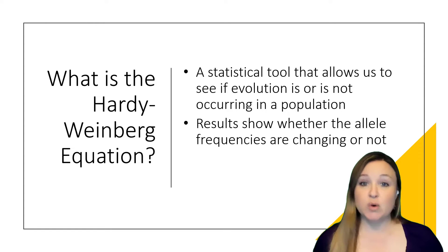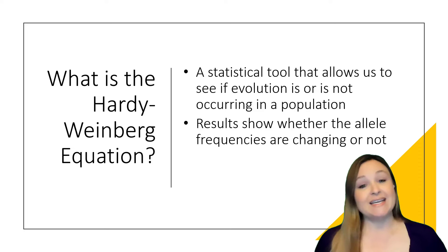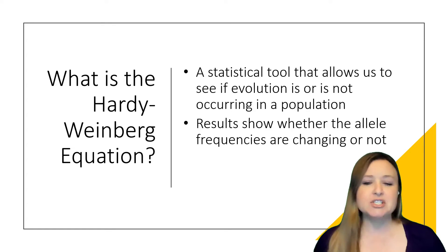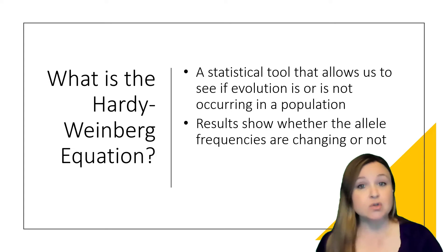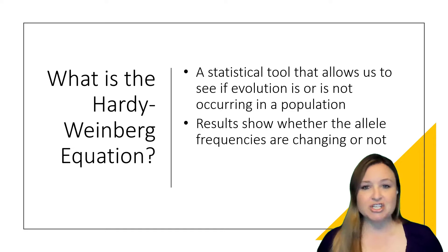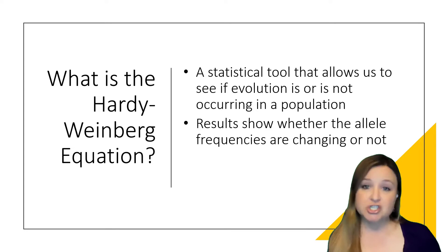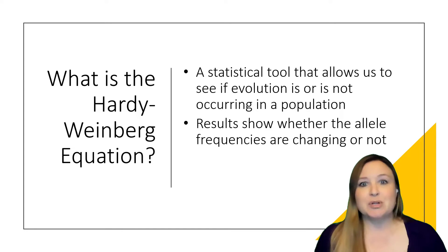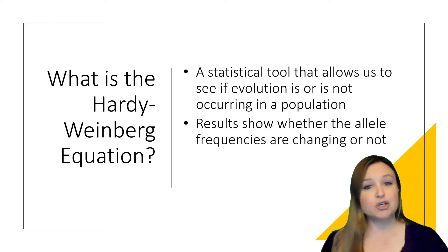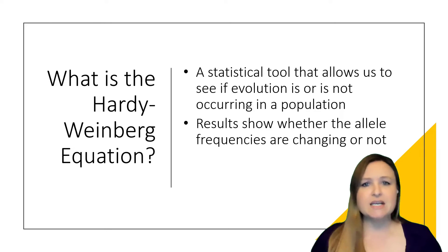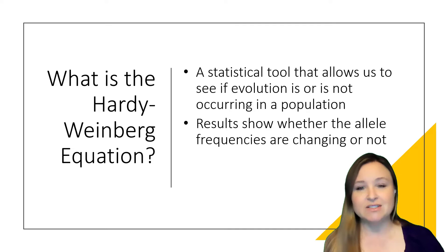So what is the Hardy-Weinberg equation? It was come up with by English mathematician Hardy and German physician Weinberg, and essentially it's a statistical tool that allows us to see if evolution is or is not occurring in a population. By looking at the different variables, we can see whether the allele frequencies in a population are changing or not — just looking at one point in time and then another to see if there's a different frequency of alleles.